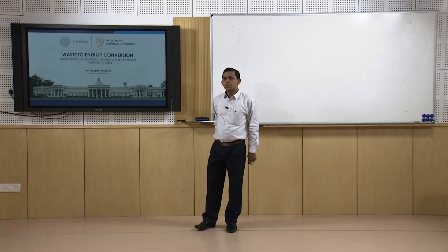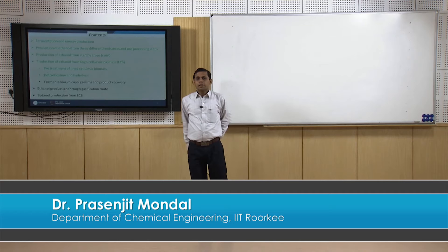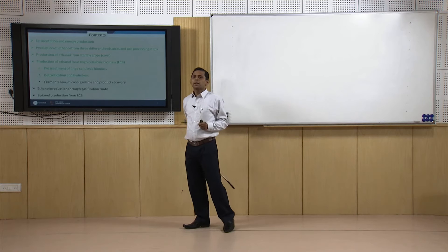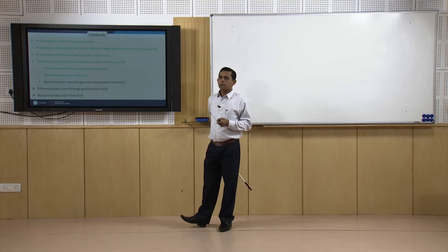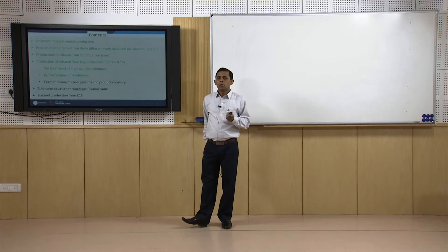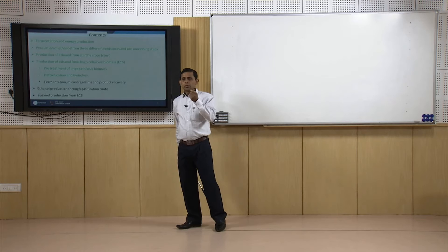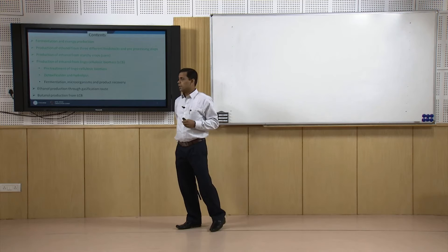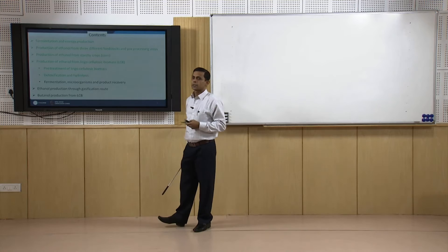Good morning. Now we will start discussion on a new module: energy production from organic waste through fermentation. Fermentation is a metabolic process in which sugar is converted to acids, gases, or alcohol — basically ethanol and butanol are produced in this route. As discussed in the previous module on anaerobic digestion, organic compounds are converted to low molecular weight organic acids through fermentation, which are further converted to methane through methanogenesis. In this module, we will concentrate basically on alcohol production from organic feedstocks.